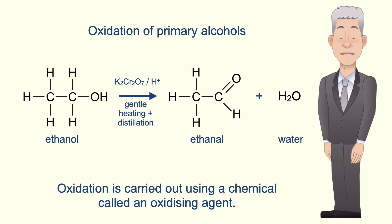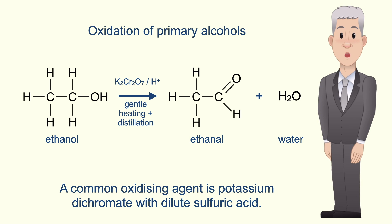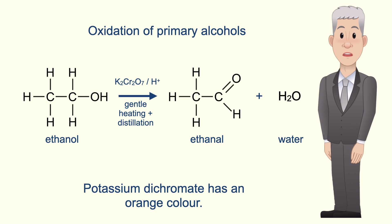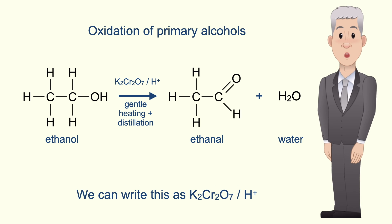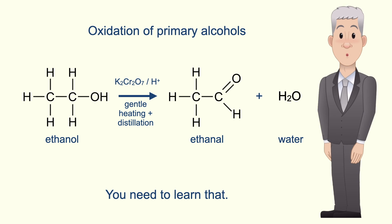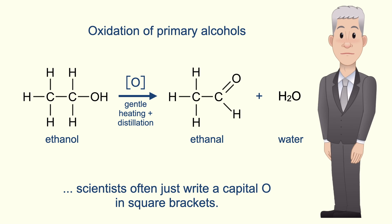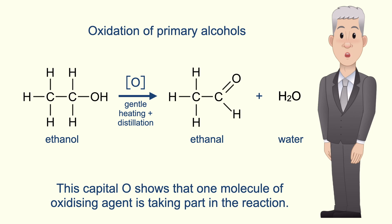Oxidation is carried out using a chemical called an oxidizing agent, and a common oxidizing agent is potassium dichromate with dilute sulfuric acid. Scientists call this oxidizing agent acidified potassium dichromate. Potassium dichromate has an orange color. We can write this as K2Cr2O7/H+ and you need to learn that. However, rather than writing all of that out, scientists often just write a capital O in square brackets, which shows that one molecule of oxidizing agent is taking part in the reaction.